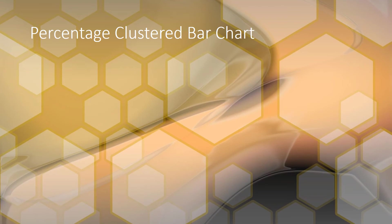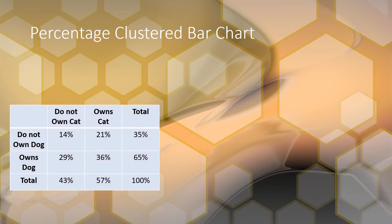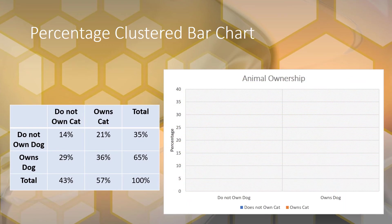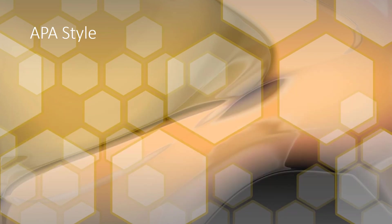You can also do it with percentages. The same idea applies — you need a percentage contingency table, and the chart will look the same except the y-axis will show percentages. The bars are exactly the same; only the y-axis is different.